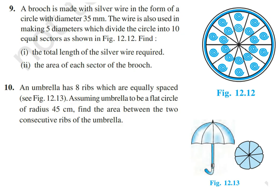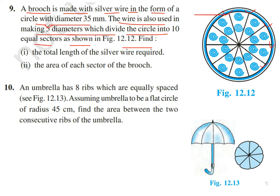Question number 9: A brooch is made with silver wire in the form of a circle with diameter 35 mm. The wire is also used to make 5 diameters which divide the circle into 10 equal sectors, as shown in the figure.